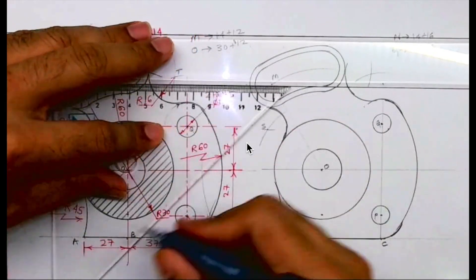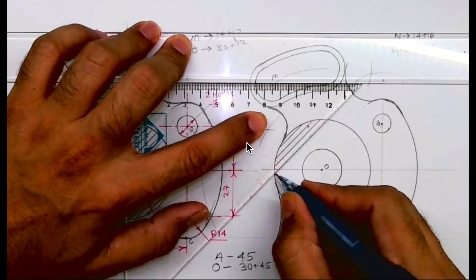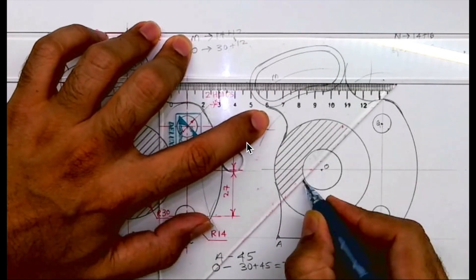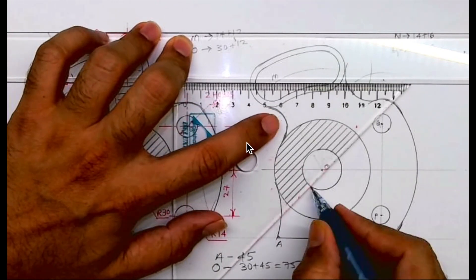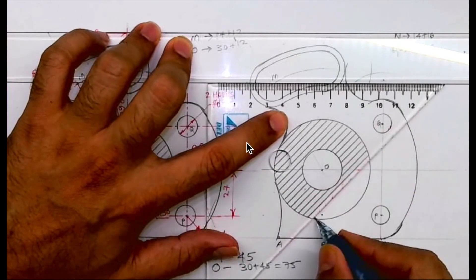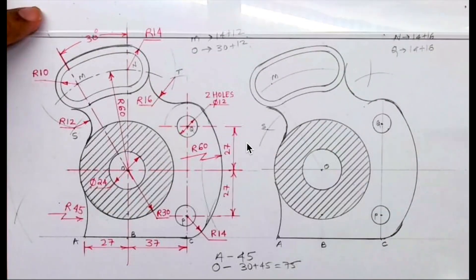Now you can draw the 45-degree lines. I hope you people have understood this. This is an ICSE technical drawing application paper question, board question paper from 2019. Thank you.